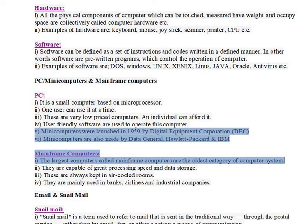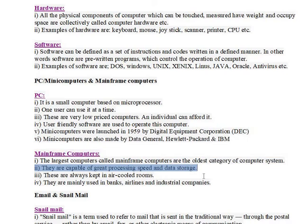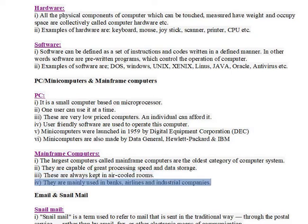The largest computers, called mainframe computers, are the oldest category of computer system. They are capable of great processing speed and data storage. These are always kept in air-cooled rooms. They are mainly used in banks, airlines, and industrial companies.